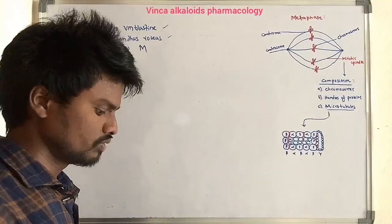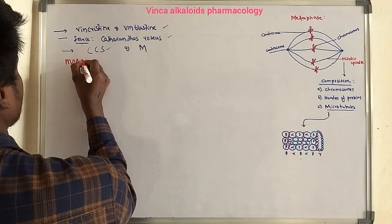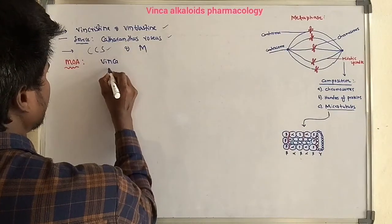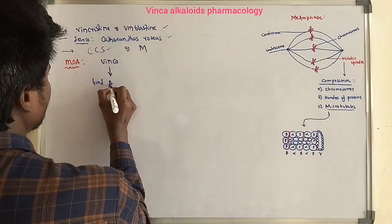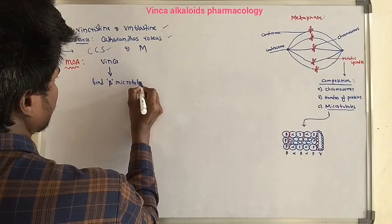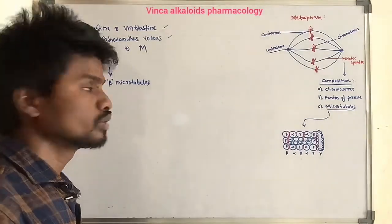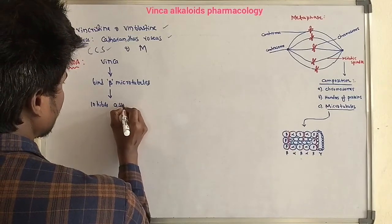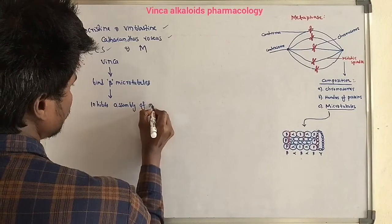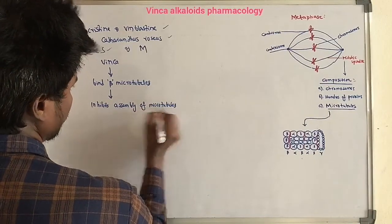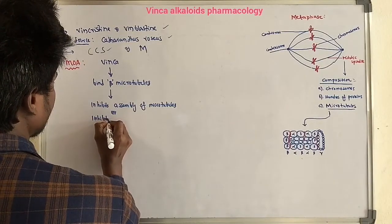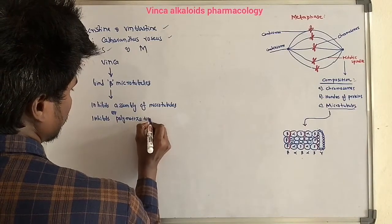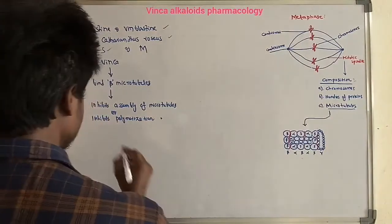The mechanism of action of Vinca Alkaloids: Vinca Alkaloids bind to beta-tubulin subunits of microtubules. This binding results in inhibition of the assembly of microtubules, that is, it inhibits the polymerization of microtubules.